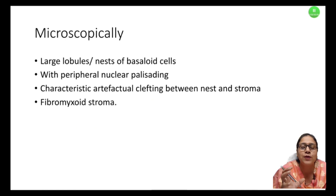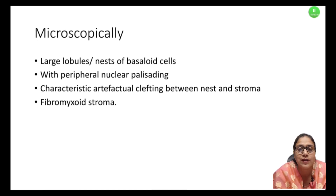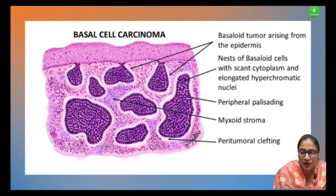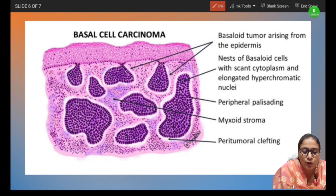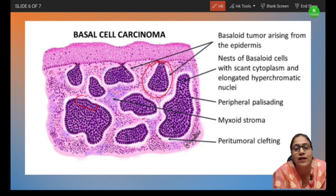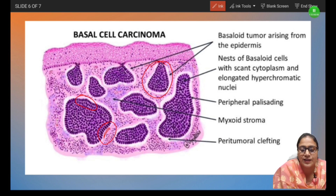Microscopically, we get large lobules or nests with peripheral nuclear palisading, and there is characteristic artifactual clefting between the nest and the stroma. This is the typical classical picture of basal cell carcinoma, in which you can see these lobules, nuclear palisading — meaning parallely arranged nuclei — and clefting, which is the gap visible between the lobule and stroma.